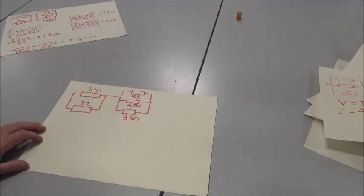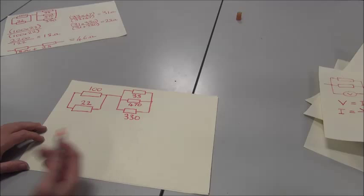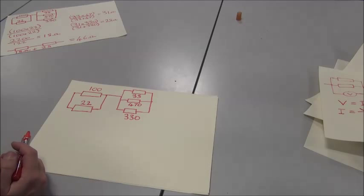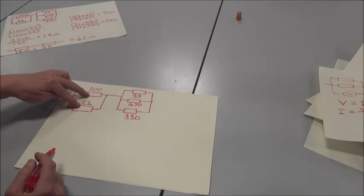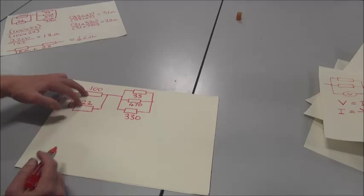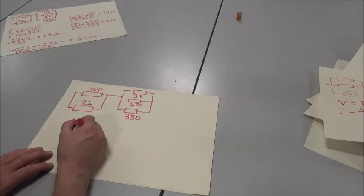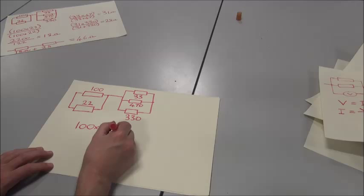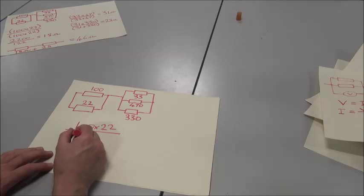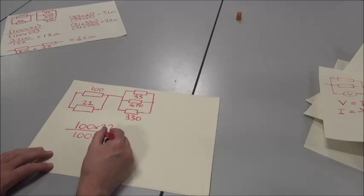From the class teaching, you will know that when we have a parallel bank of resistors, we can use a technique known as product over sum to figure out the resistance of each parallel bank. Product over sum is both resistors times together, divided by the sum of both resistors.